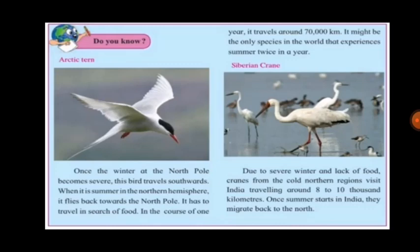Once winter at the North Pole becomes severe, a certain bird travels southwards. When it is summer in the northern hemisphere, it flies back towards the North Pole in search of food. This bird is the Arctic tern. In the course of one year, it travels around 70,000 kilometers. It might be the only species in the world that experiences summer twice in a year.